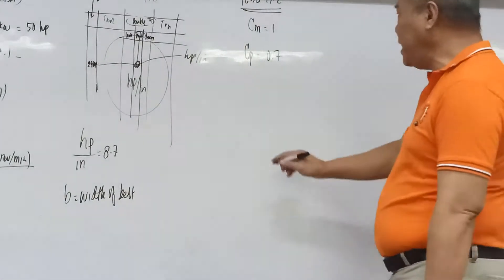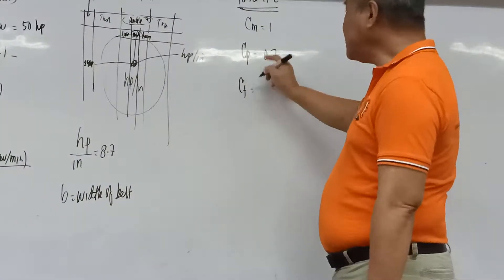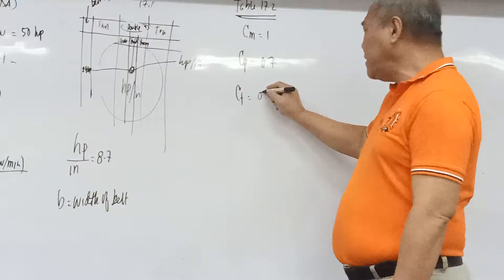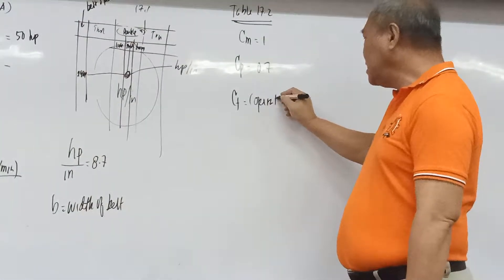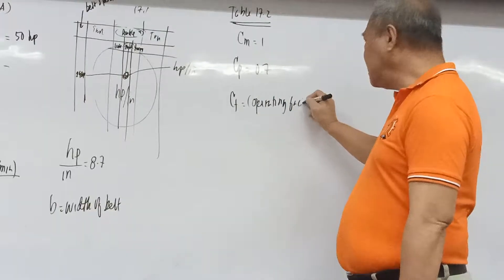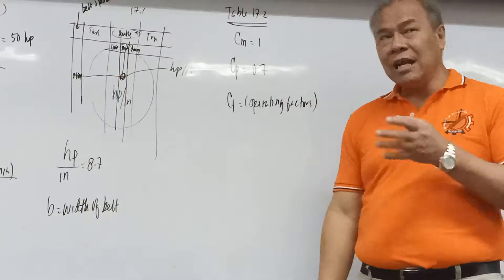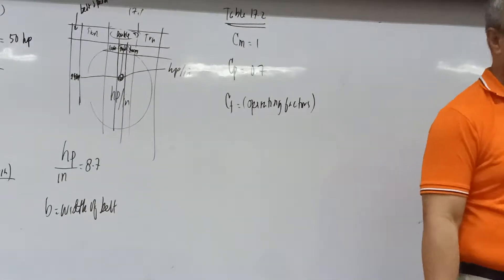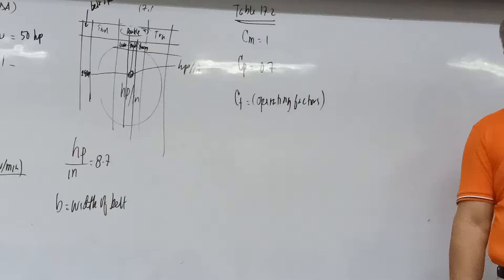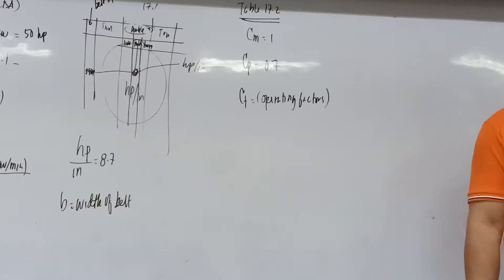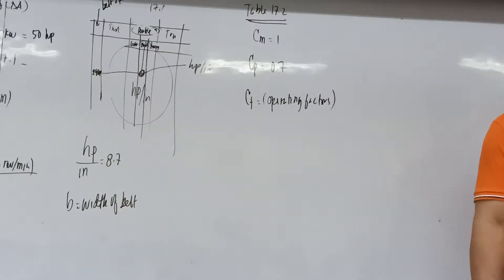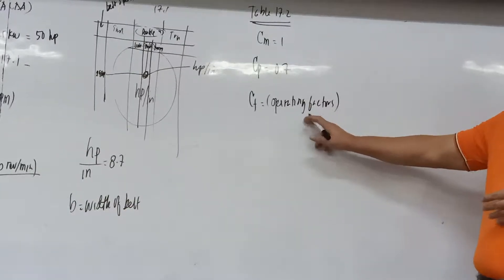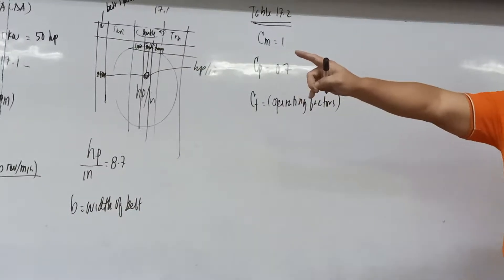When the problem states to use the ALBA table, use it. When not stated, use the general belt equation. Now, the next step is to compute the stress using the general belt equation, using recommended data from the textbook. The stress equation is: (F1 - F2) = b × t × (σ - ρV²/g) × (e^(fθ) - 1) / e^(fθ).